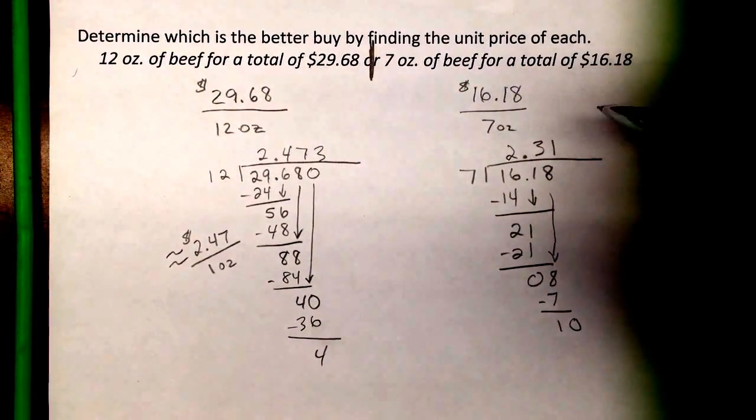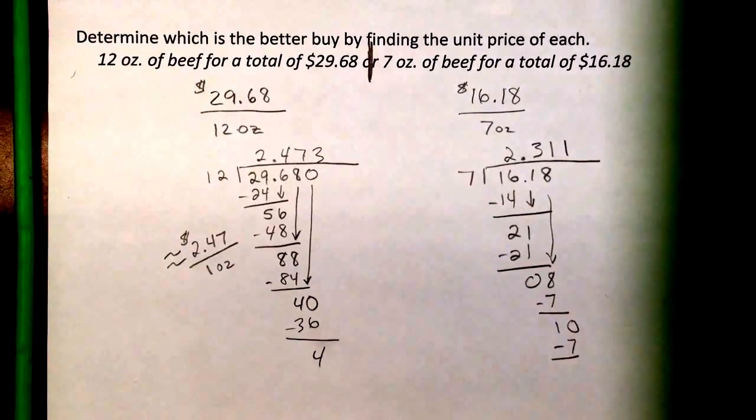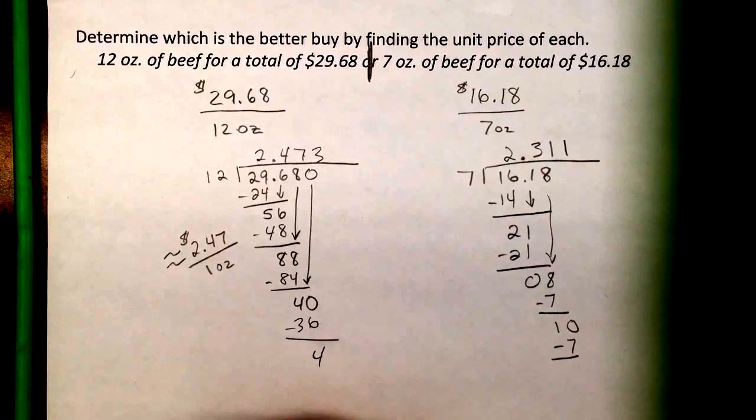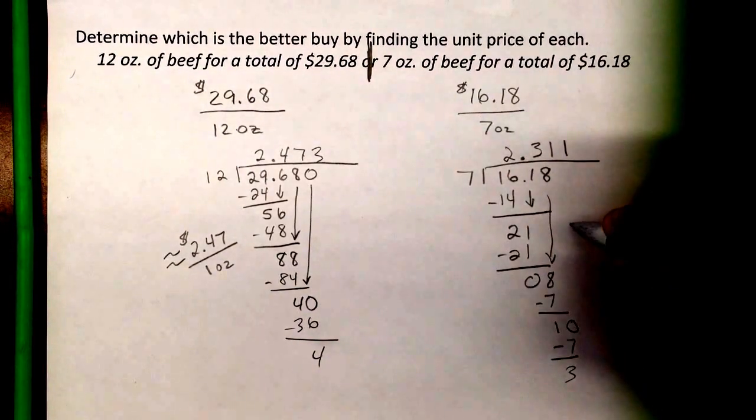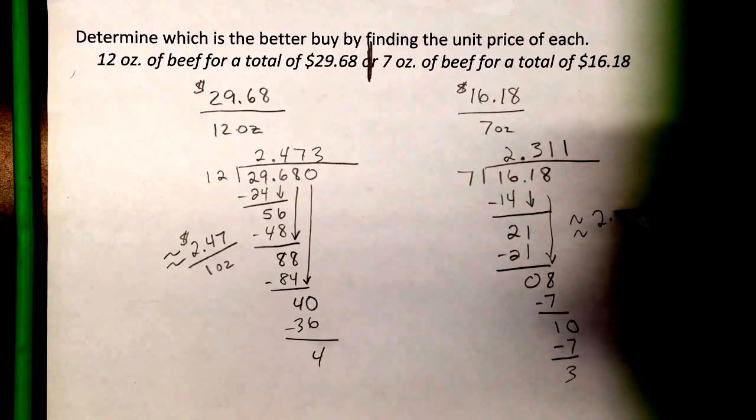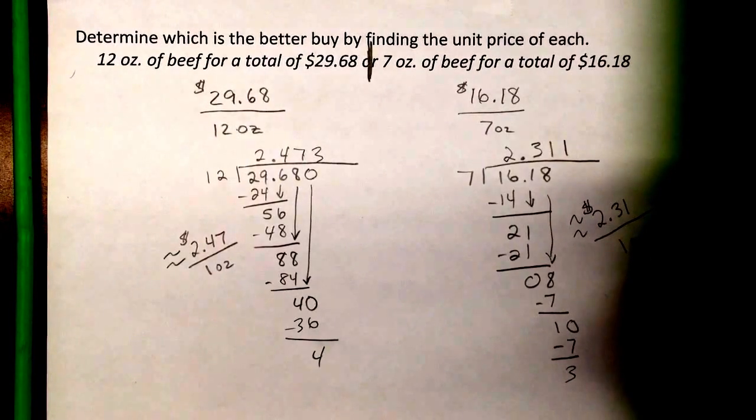And then one more time for estimation purposes, 1 times 7 would be 7. And that would be 3. So we can see we're approximately here. It's about $2.31, per 1 ounce.